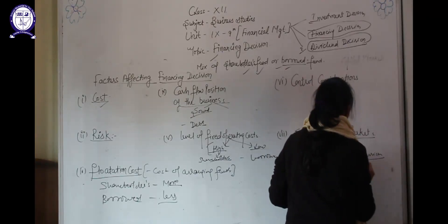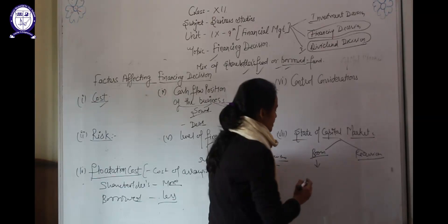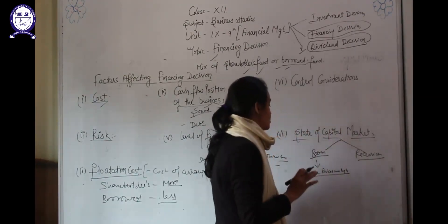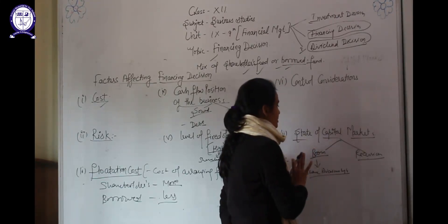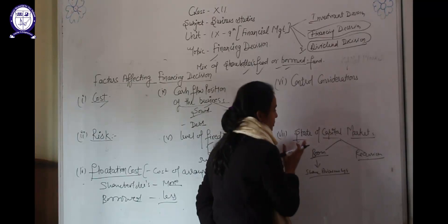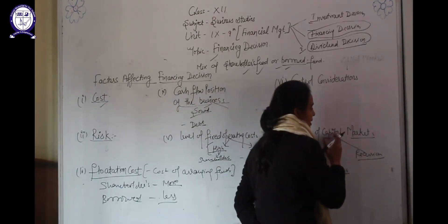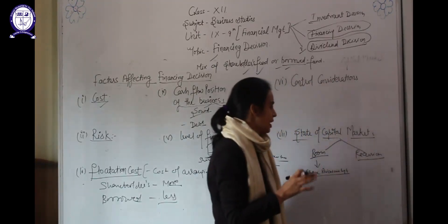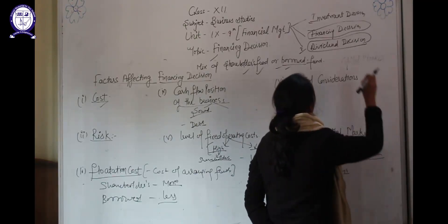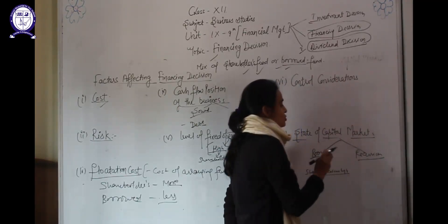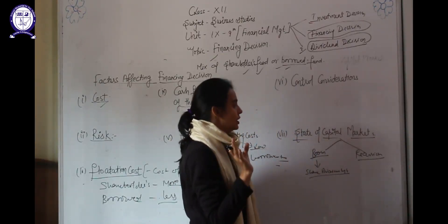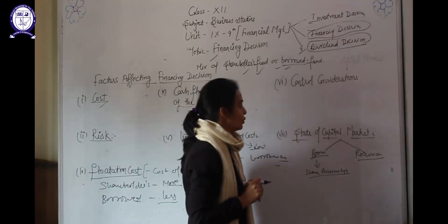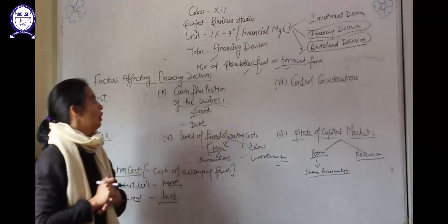The state of capital market — there are two types: boom (teji) and recession or depression (mandi). When there is a boom condition, share prices are high and investors like to invest in shares, so it is easier for a company to collect funds by issuing shares. When the capital market is in recession, prices are low and investors don't like to invest, so the company should use borrowed funds. Investors want a secured option during recession, so the company can arrange funds through borrowing. These were the factors affecting financing decisions.